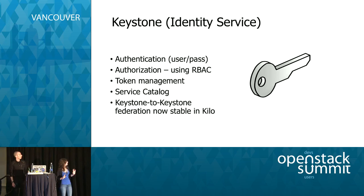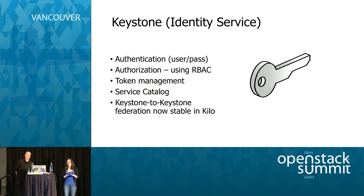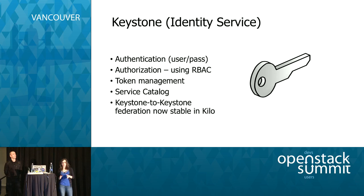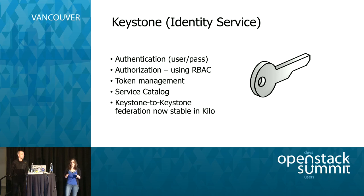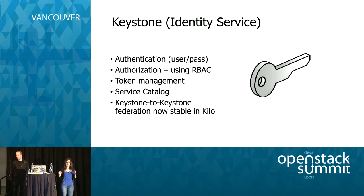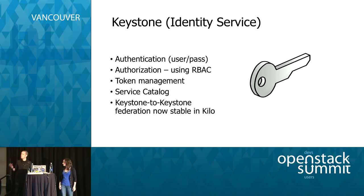Keystone is the identity service — some of the names have great little puns in them. Keystone boils down to authentication and authorization: who are you, and what can you do inside of OpenStack? Keystone is really important to deploy in a highly available manner because if you don't have Keystone, you're not doing anything else in OpenStack. One great feature from the Kilo release is Keystone-to-Keystone Federation, which means different OpenStack clouds can actually talk to each other — an important initiative as folks get started and want to engage multiple clouds.